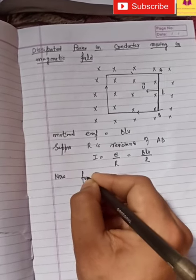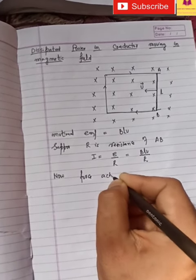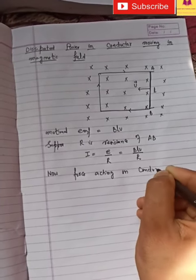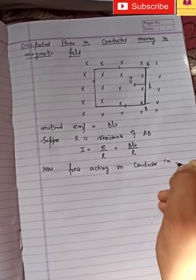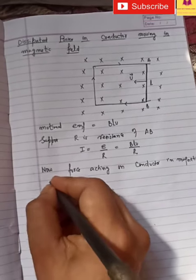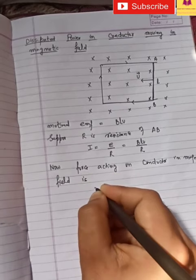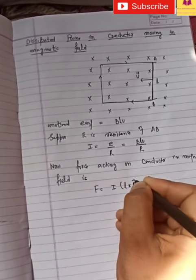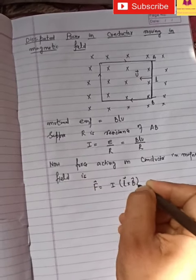Now, force acting on conductor. How much force is on the conductor when it is in a magnetic field? You know, BIL. In magnetic field, F is nothing but I times L cross B. So we can write F equals I times L cross B.